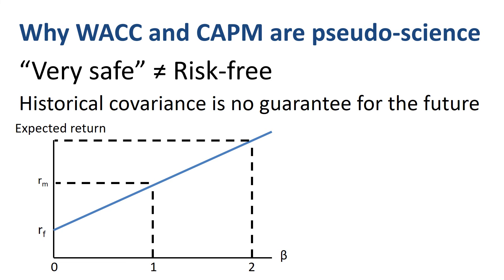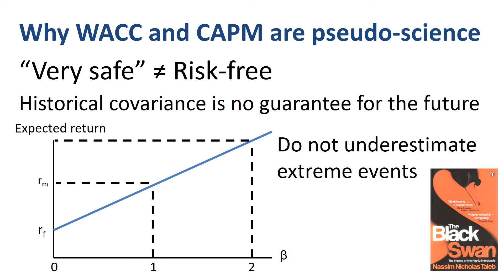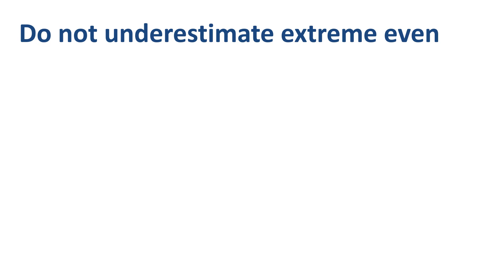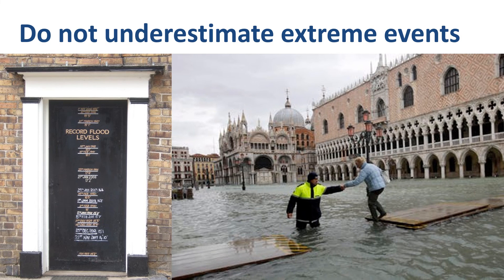Second issue: historical covariance is no guarantee for the future. More specifically, extreme events are more common than a normal distribution would imply. Reading 'The Black Swan' by Nassim Taleb will fully clarify this point. This is intuitively obvious for people living near the sea or near a river — the record flood level so far is no indication, and certainly no guarantee, of potential flood levels in the future. It can easily be surpassed, and not by just a little bit. Why do most people understand this for nature, but fail to understand it in the context of the stock market?